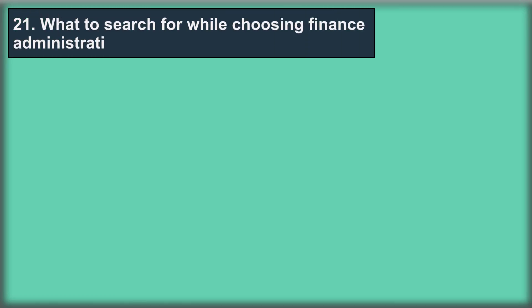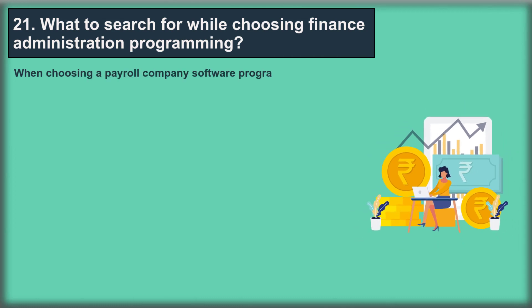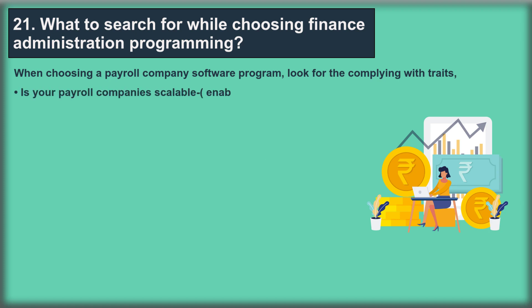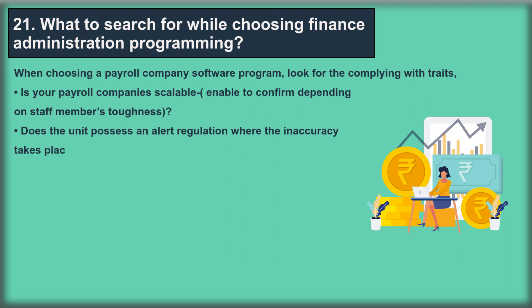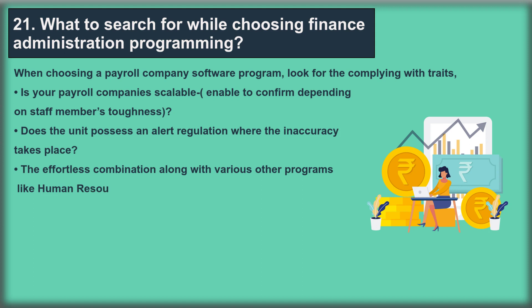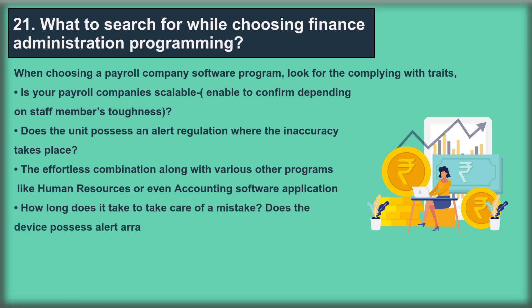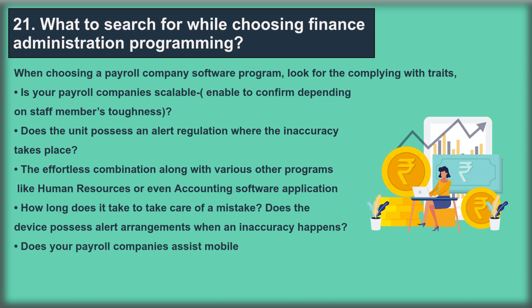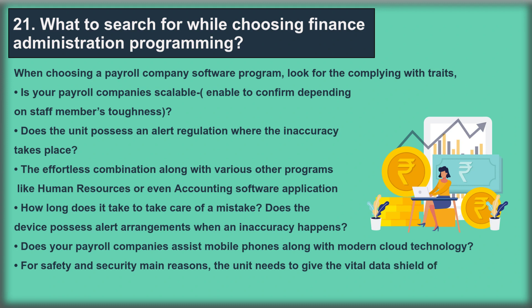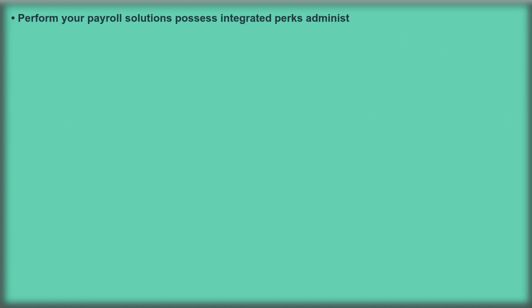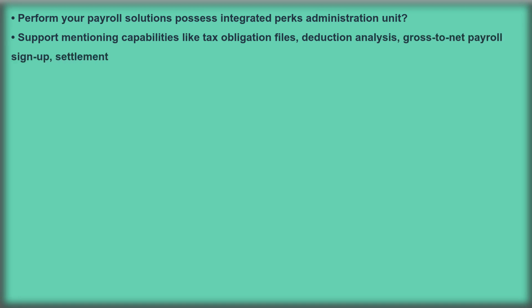Question 21: What to look for while choosing payroll administration software? When choosing payroll company software, look for the following: Is the payroll system scalable based on staff size? Does the system have an alert system when an error occurs? Does it offer easy integration with other programs like HR or accounting software? How long does it take to fix a mistake? Does it support mobile devices with modern cloud technology? Does it provide essential data encryption, disaster recovery strategies, and data backup? Does the payroll solution have an integrated benefits administration system? Does it support reporting capabilities like tax files, deduction analysis, gross-to-net payroll register, and settlement analysis?